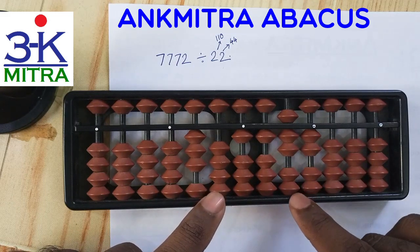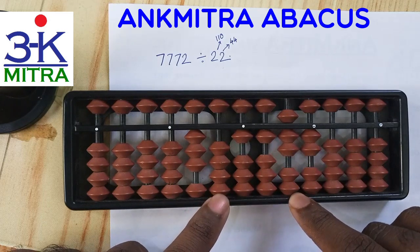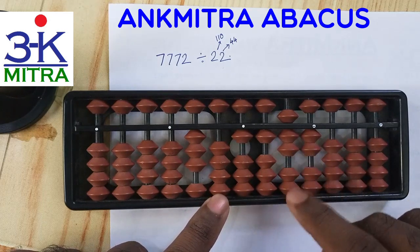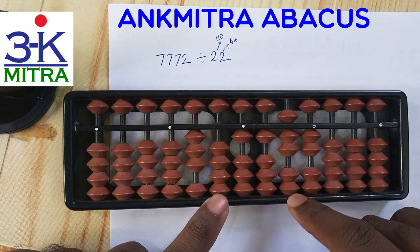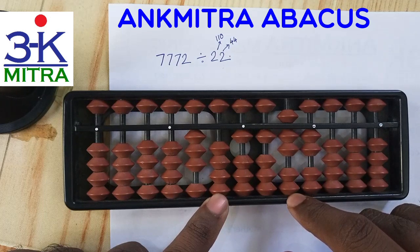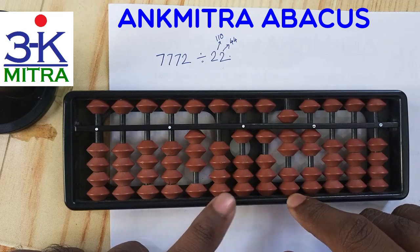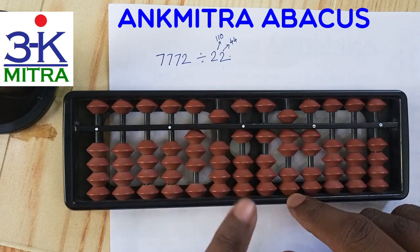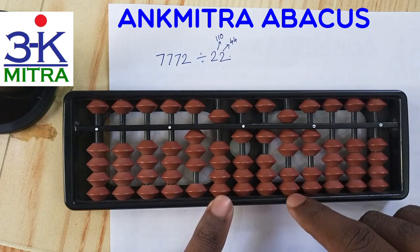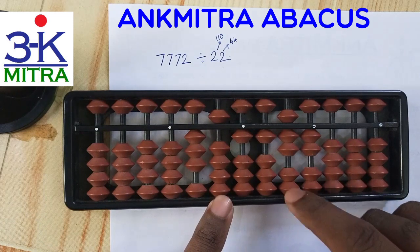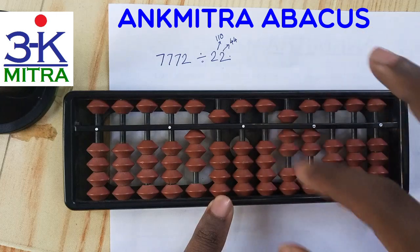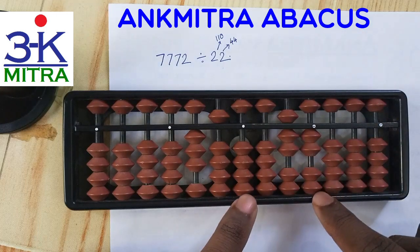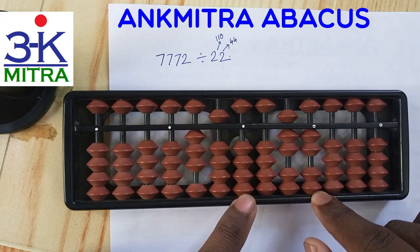We move to the next rod on both the question set and answer set. The number up to this rod is 117. We can subtract 5 times 22, which is 110. I take 5 on the corresponding second rod of the answer set and subtract 110 from 117. Now moving to the next rod, the number is 72.